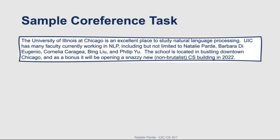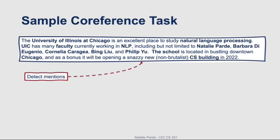Here's what the two-stage process of mention detection and then clustering looks like with a sample text passage, which is very similar to the passage that we saw in the overview of coreference resolution video. We'll start out by detecting mentions. There are a variety of NLP techniques for performing named entity recognition on text samples, which we didn't have time to cover this semester, but that you can read more about in chapter 18 of the course textbook. There are also third-party libraries that have nice off-the-shelf named entity recognizers like SpaCy and NLTK.